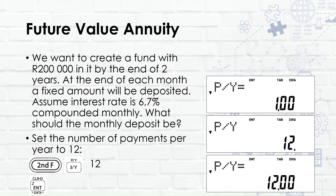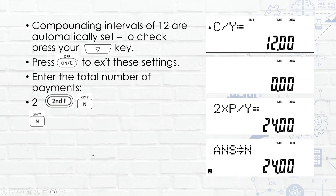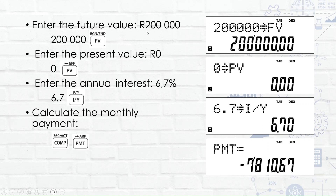The first example is a future value annuity. We want to create a fund with 200,000 rand at the end of two years. At the end of each month we make a payment, earning 6.7% interest compounded monthly. We need to find the monthly deposit. First, set payments per year to 12, check the compounding interval is also 12, then calculate total number of payments, input future value, present value, interest rate, and compute the payment.